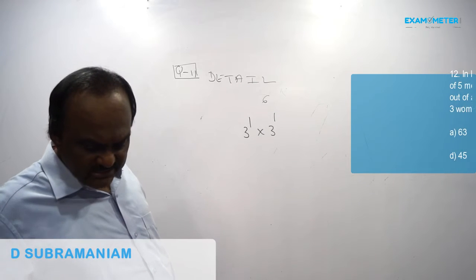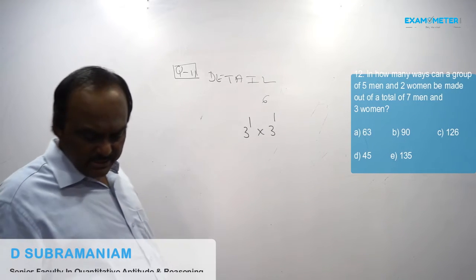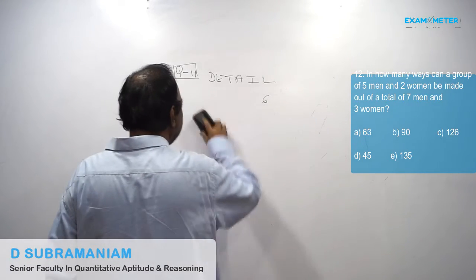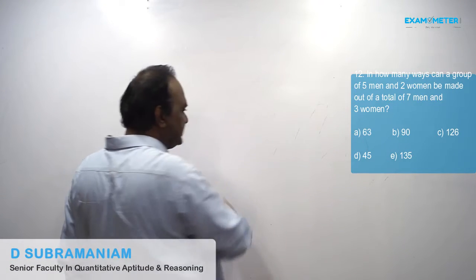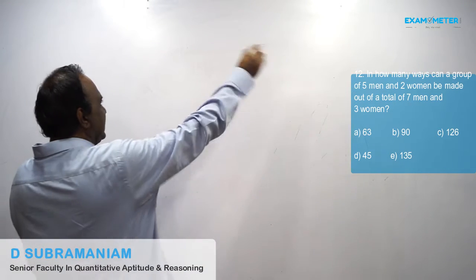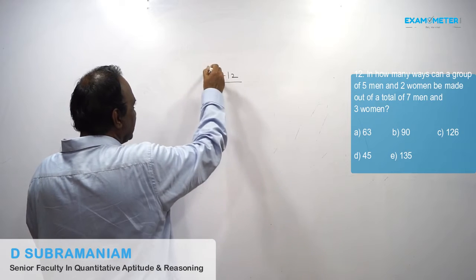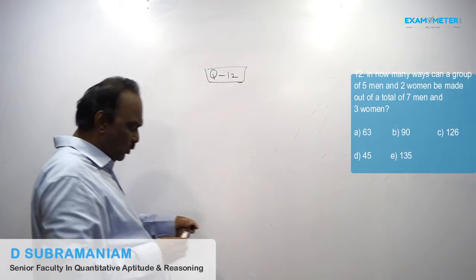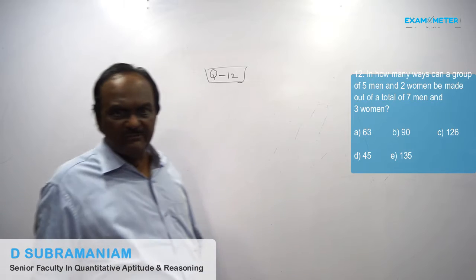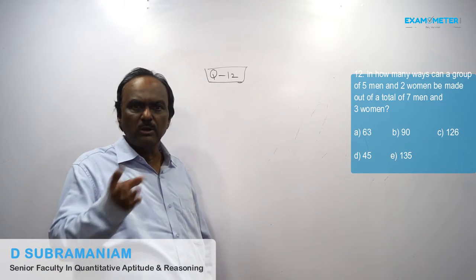Q12. In how many ways can a group of five men and two women be made out of a total of seven men and three women? This is a selections or groups problem. Whenever a question comes on selections or groups, you must follow combination.